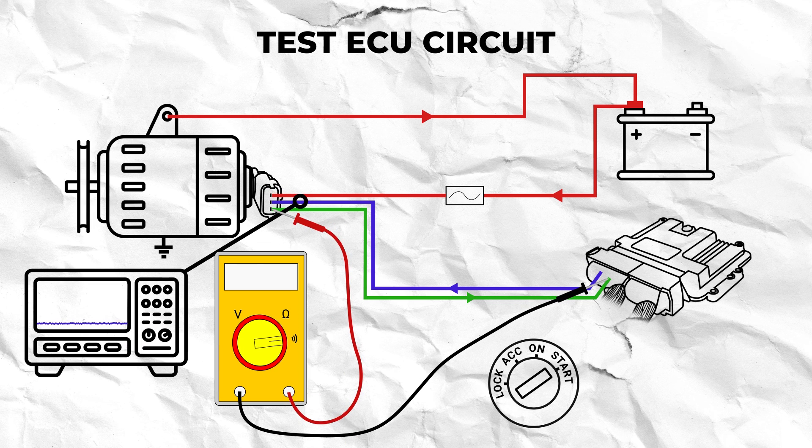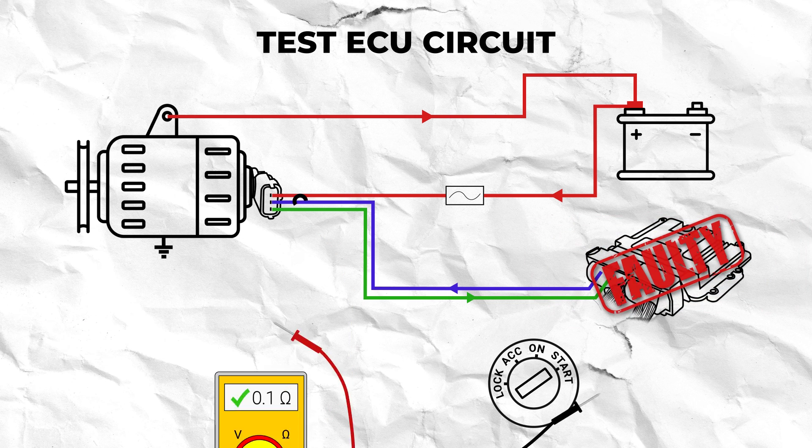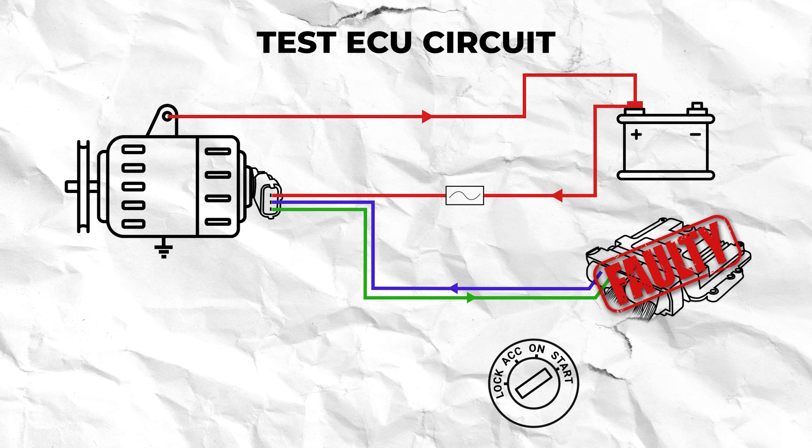If the command wire signal is non-existent or inconsistent but the wire integrity and connectors are good then the ECU is internally faulty and will need to be replaced.